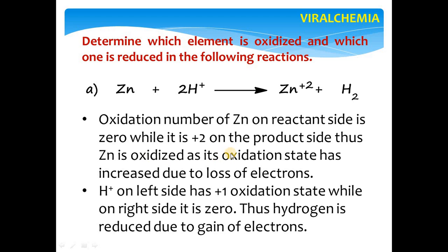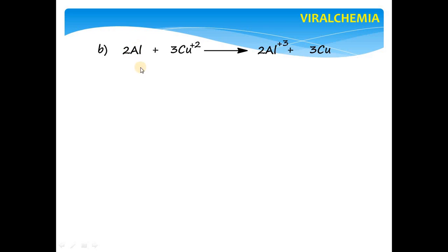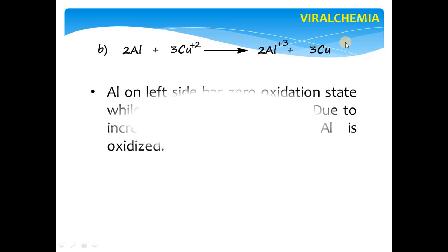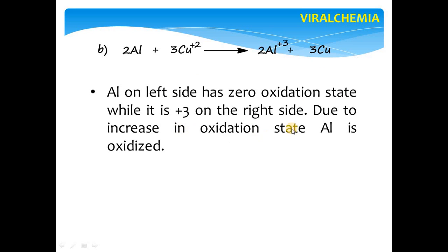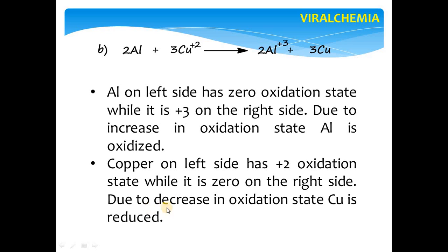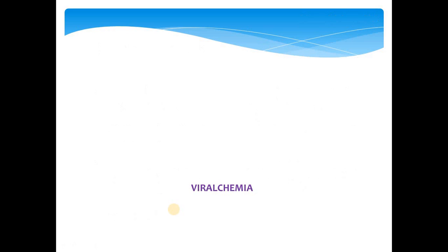Zinc is +2 on the product side, so zinc is oxidized as its oxidation state increased due to loss of electrons. Hydrogen ion on the left has +1 oxidation state while on the right it is 0, so hydrogen is reduced due to gain of electrons. Next example: Al + Cu²⁺ → Al³⁺ + Cu. Aluminum has 0 oxidation state on the left and +3 on the right — so aluminum is oxidized. Copper is +2 on the left and 0 on the right — so copper is reduced.